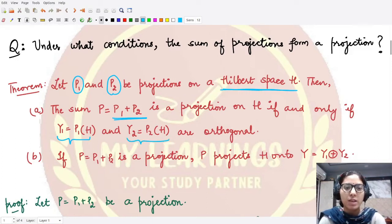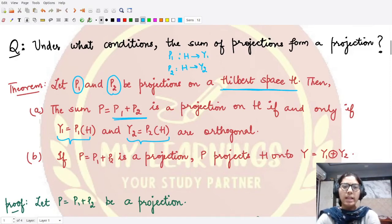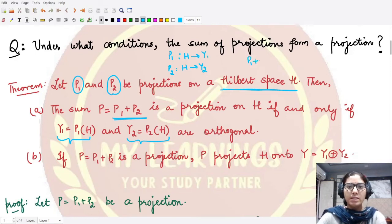So you have P1 defined from H to Y1, and you have P2 defined from H to Y2. So you can then say both P1 plus P2, that is a projection.